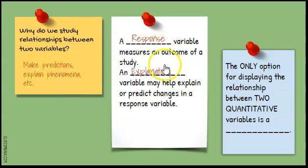A response variable measures the outcome of a study. The explanatory variable helps explain or predict the changes in the response variable. In algebra, you learned about independent and dependent variables. It's the same thing, they just have different names in stats.